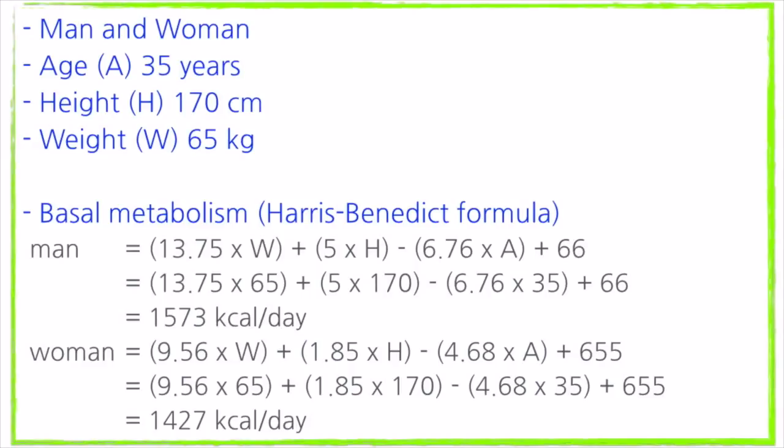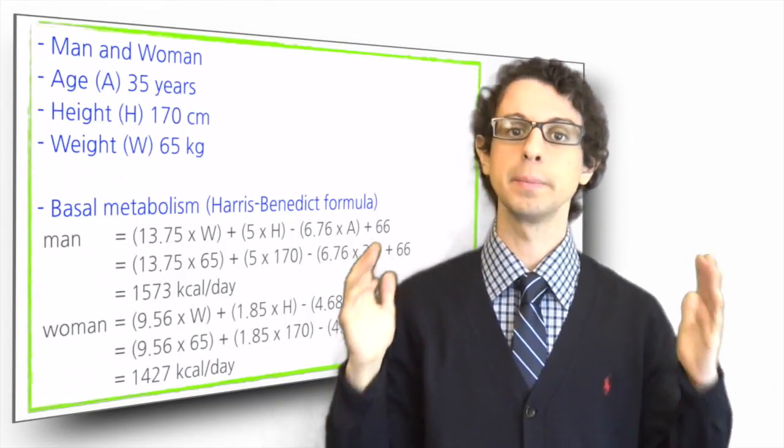For the woman, 9.56 × 65 kg plus 1.85 × 170 cm minus 4.68 × 35 years of age plus 655 equals 1427 calories per day. These are estimates of their basal metabolism.